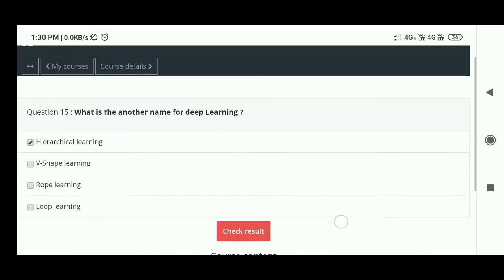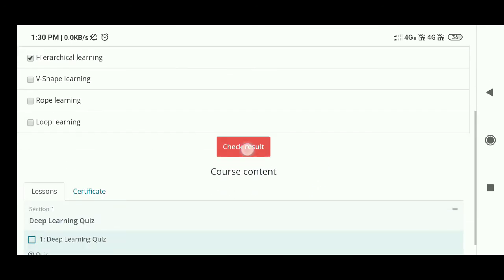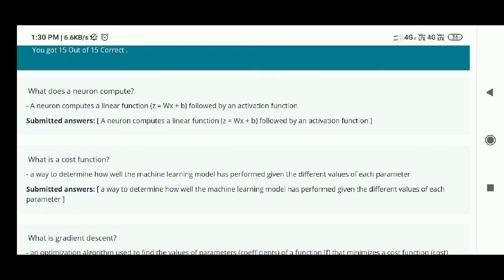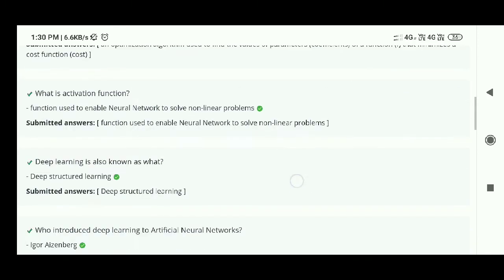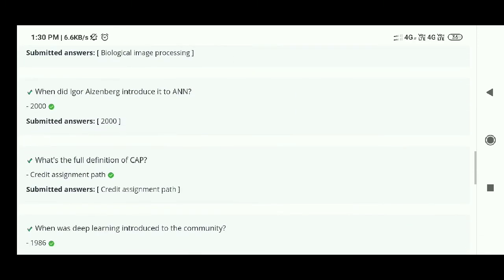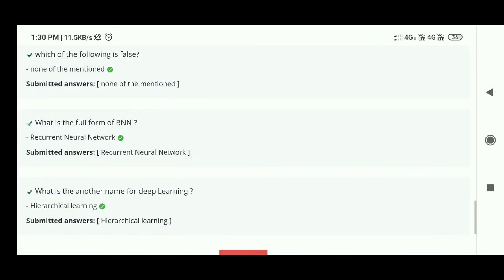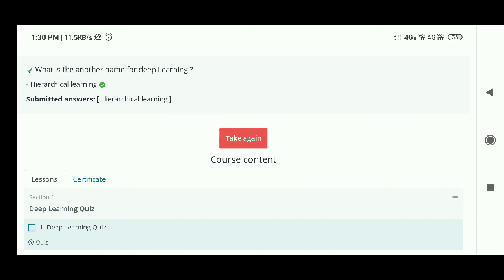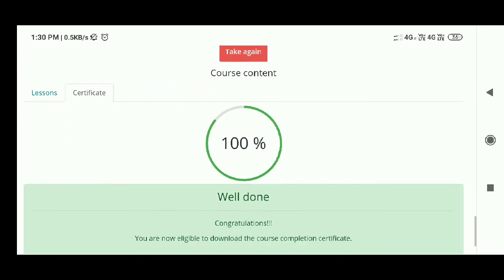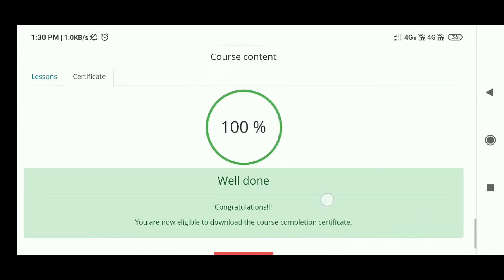Now check your results. You can see which ones are wrong. All questions are correct. If you want to get the certificate, check the checkbox. You'll see 'Deep Learning Quiz' - click the checkbox, then click the certificate option. You'll see 'Course Content 100% Complete.'